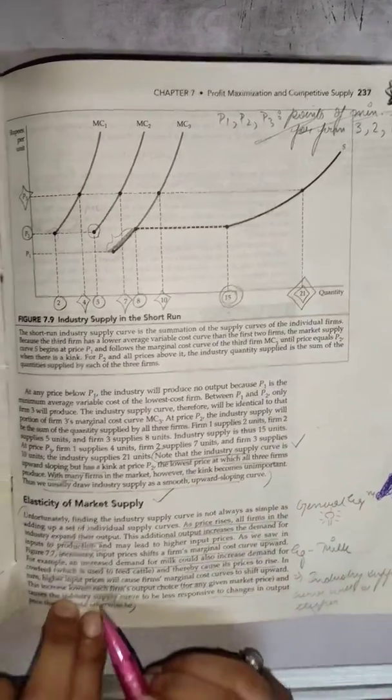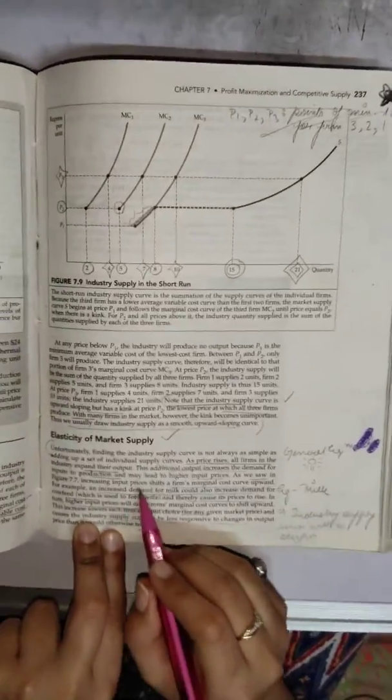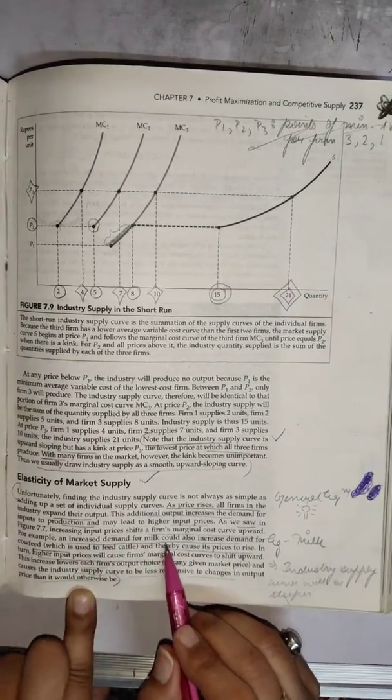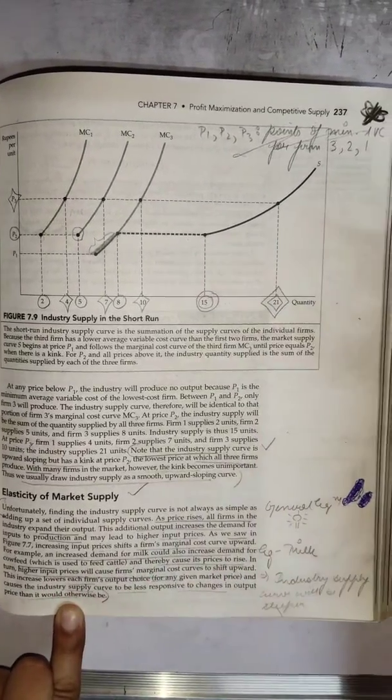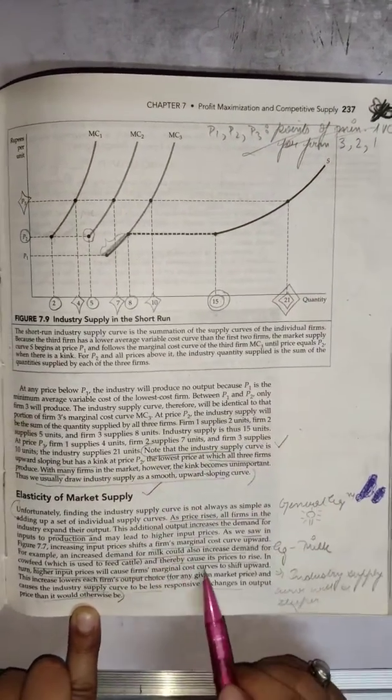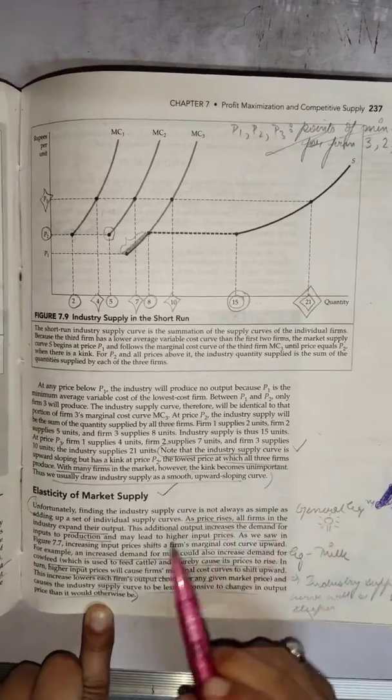Let's look at the example. Increasing input prices. For example, increased demand for milk could also increase demand for cow feed. Cow feed is an input which is used to feed cattle and thereby cause its prices to rise.